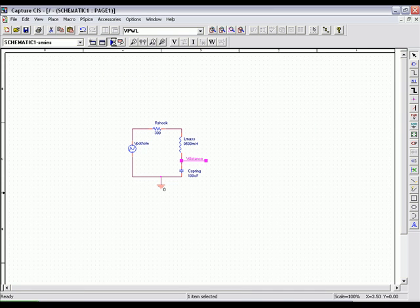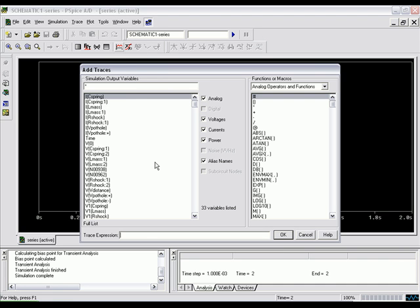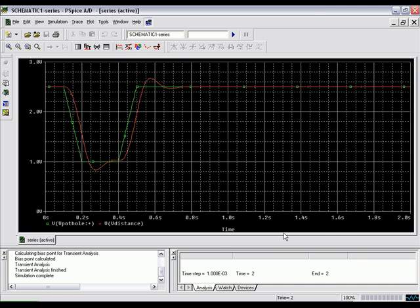And select the traces as Vpothole versus Vdistance. And you'll be able to see the simulation as if a wheel hit a pothole. You'll be able to see the distance and the dampening to the shocks as if it was a real pothole that occurred.